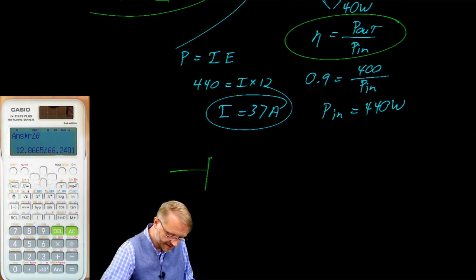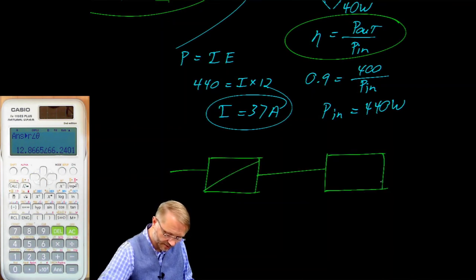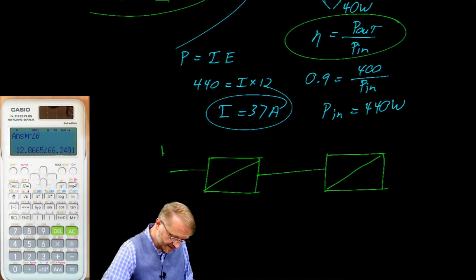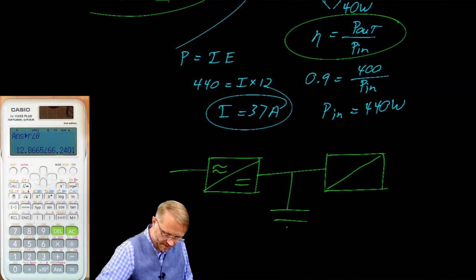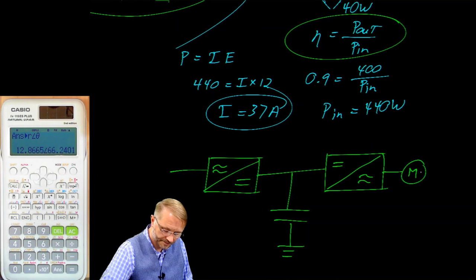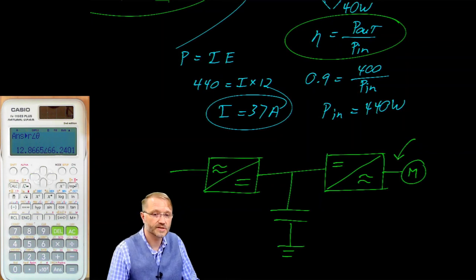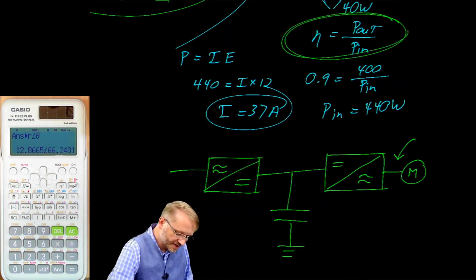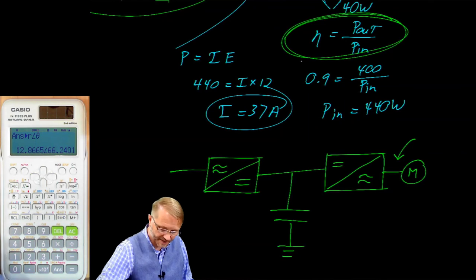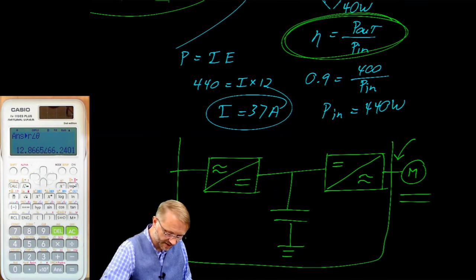Because at some point in the near future, we are going to encounter something called a variable frequency drive. What it does is it takes in AC voltage, converts it to DC. We have a large storage capacitor here to smooth everything out. Then we take DC and we convert it back into AC to drive a motor. Except this time, this AC, you can change the frequency, which means you can change the speed of the motor. I bring up efficiency because we're going to chain these together. We're going to talk about the efficiency of the motor and then we can talk about the efficiency of the variable frequency drive.